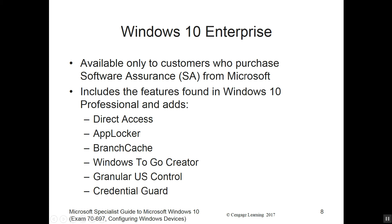Win 10 Enterprise comes with everything in Win 10 Pro, and also adds direct access, app locker, branch cache, Windows To Go creator, granular UAS control, and credential guard.